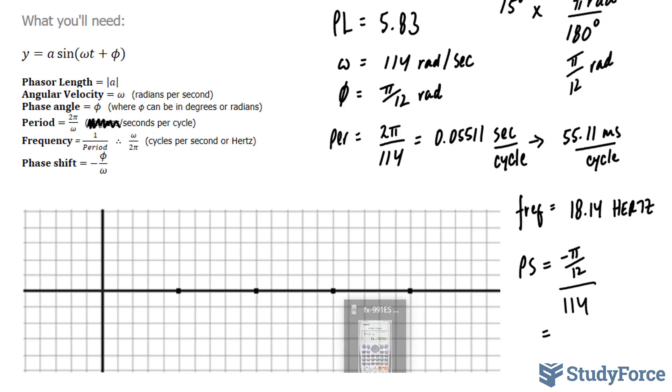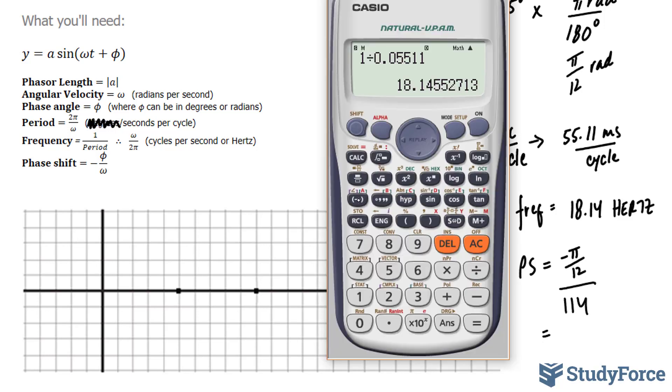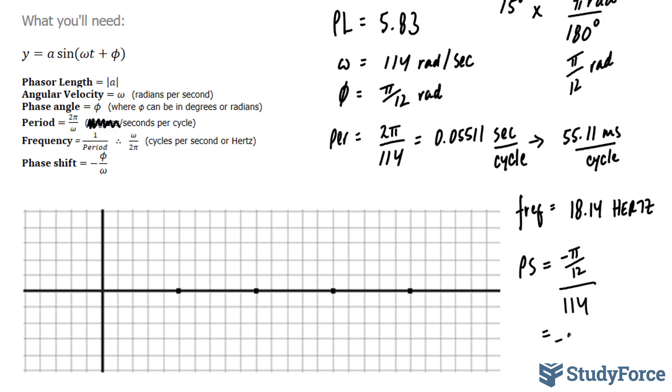We should end up with, using our calculator, negative pi over 12 divided by 114 gives us the following number: negative 0.002296, negative 0.002296.